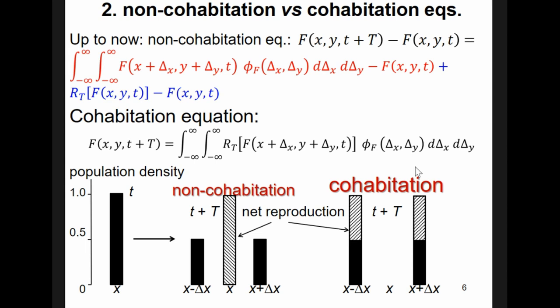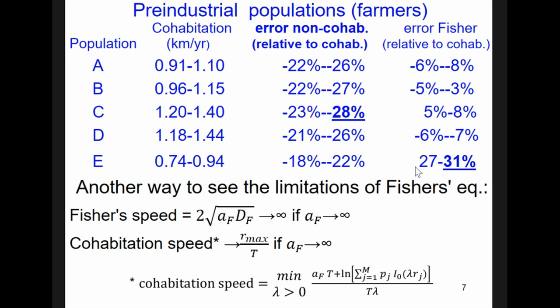Why does this new generation appear here? Because the reproduction term takes place at x,y, which is the same place where we are computing the population density. In contrast with the cohabitation equation, first the population reproduces, and then all of it moves. So, here there is no longer people, and this is much more reasonable. So, if we want to know what is the error of using or not using this cohabitation effect, we find that this is about 30%, and then Fisher's equation, compared to this two-dimensional model based on the cohabitation effect, also gives an error of about 30%.